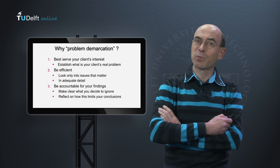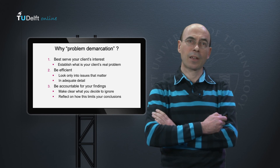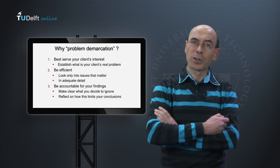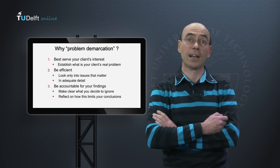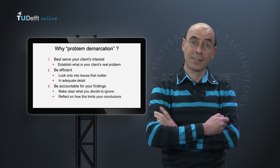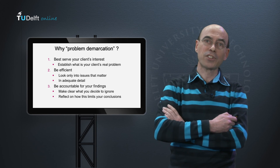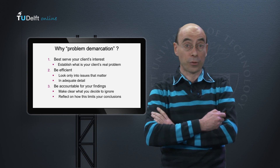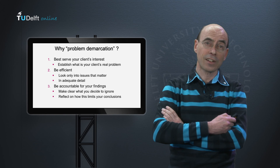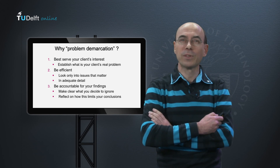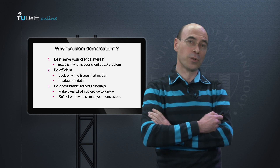Let me start with a quick recap. Problem demarcation is a crucial step for three reasons. First, you help your client to establish what is the problem that is most relevant to analyze. Second, by focusing only on issues that matter and at the right level of detail, you save time and effort. And thirdly, by explicitly defining the scope of your analysis, you and your client can reflect on how this will eventually limit the conclusions that you can draw and the recommendations that you can make.